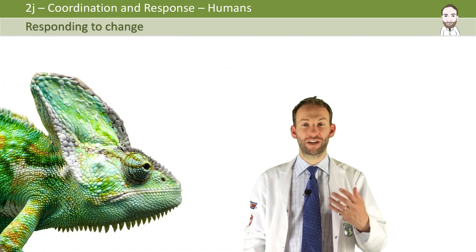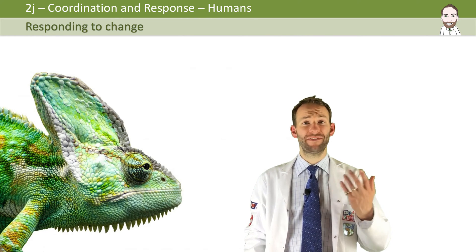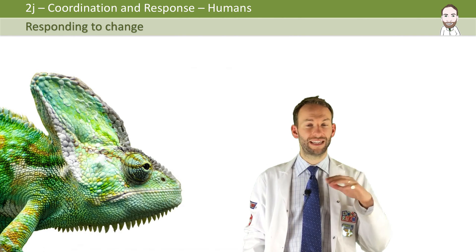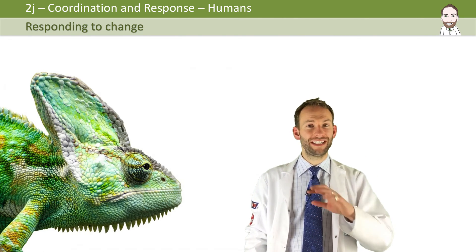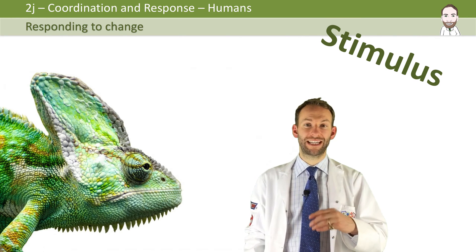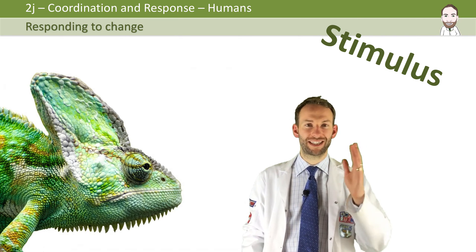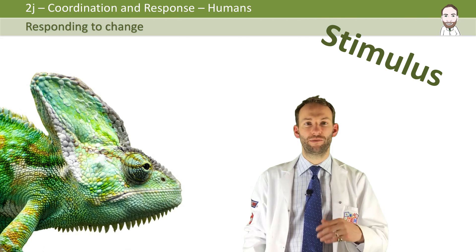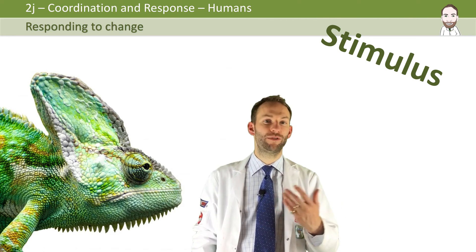In order for living organisms to find food, avoid danger, find a mate, basically everything they need to do to live, they've got to be able to respond to what's around them and any changes in their environment. Any changes that occur in the environment we call in biology stimuli, or stimulus is the singular. So organisms need to be able to detect the stimuli and then respond to them, and then they will hopefully stay alive and ideally reproduce.